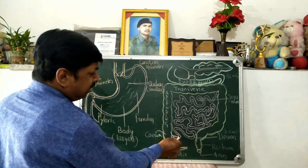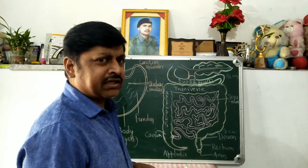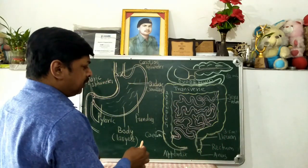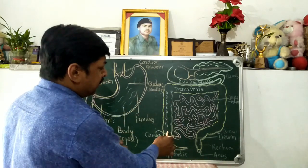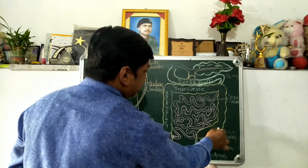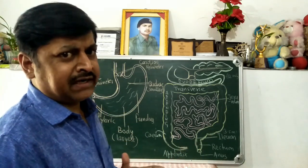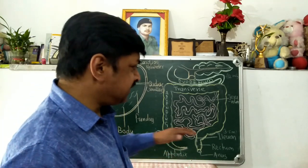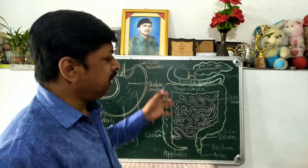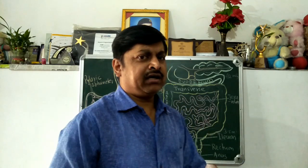The large intestine is divided into cecum, colon, and rectum. The colon is further divided into the ascending colon, transverse colon, descending colon, and sigmoid colon, followed by the rectum. The total length of the large intestine is approximately 1.5 meters, but its diameter is more — about 2.5 inches — compared to the small intestine. The small intestine has a smaller diameter, which is why it is called 'small,' while the large intestine is called 'large' because of its greater diameter.